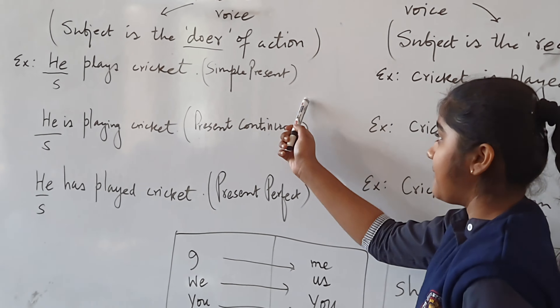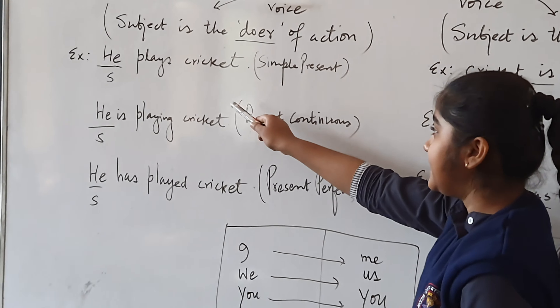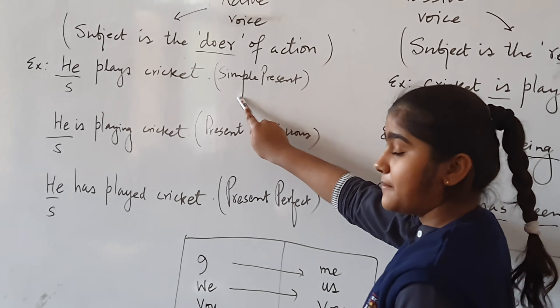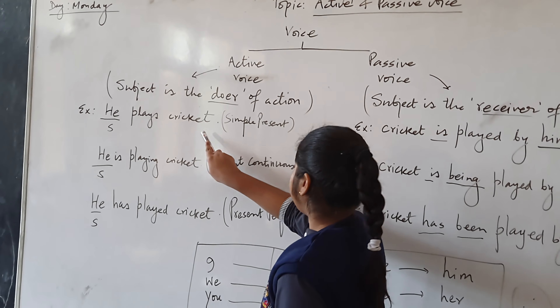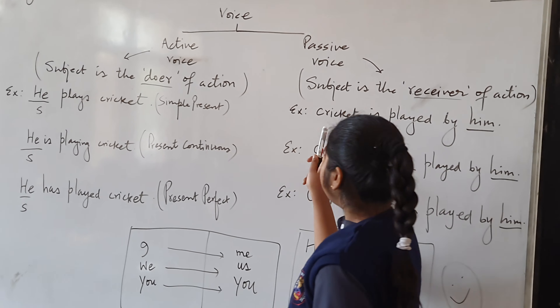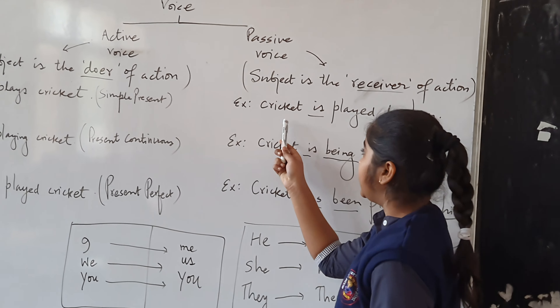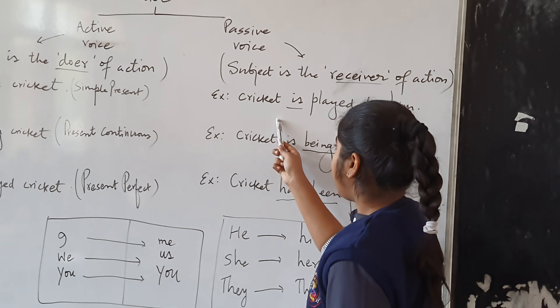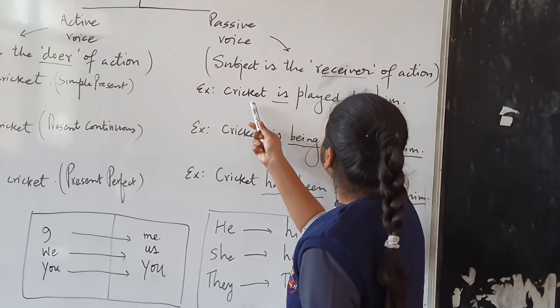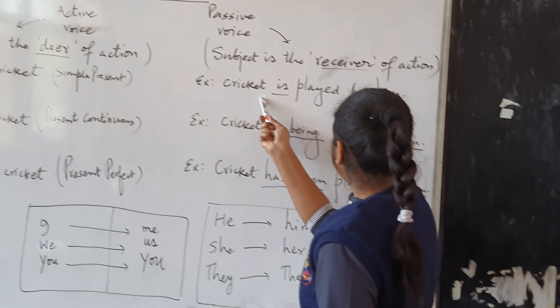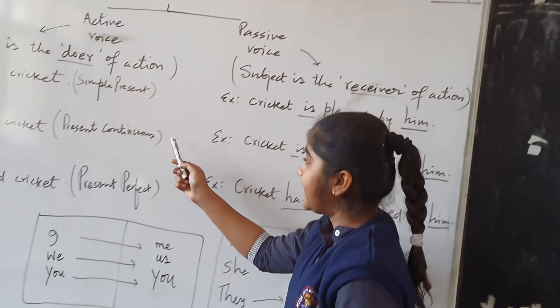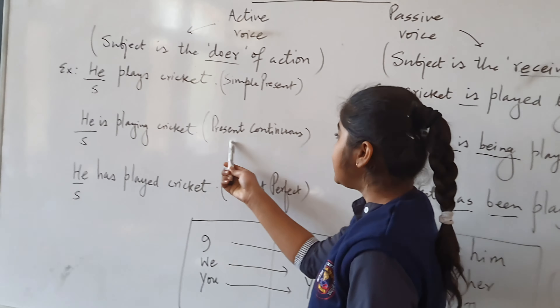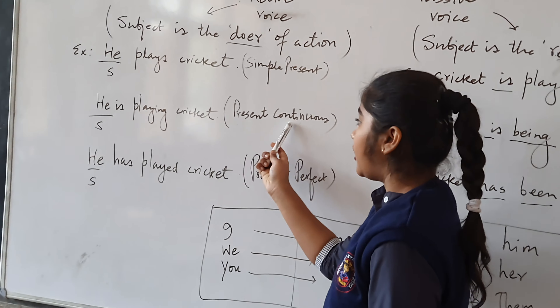Let's take an example. This sentence is of simple present: 'He plays cricket.' When we change it into passive voice, it becomes 'Cricket is played by him.'